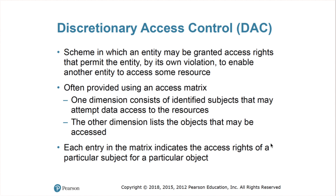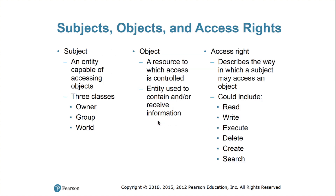DAC uses Access Control Lists (ACLs). Those matrices with users, subjects, and their permissions become the ACLs. The subject is an entity capable of accessing objects. There are three classes in DAC: owner, group, and world. Objects are the resources being accessed or controlled. An ACL contains either a user or predefined group of users and their corresponding access levels, which could include read, write, execute, delete, create, and search.